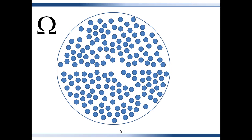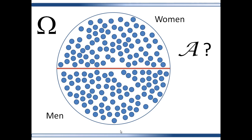Now let's look at an outcome set — here it is with all of its elements. Suppose you create a sigma algebra based on segmenting this outcome set on women and men. What would your sigma algebra look like? You would have the whole outcome set, the null set, the set women, and the set men. Any other union or complement is already there. The complement for women is men — it's there. The union of women and men is the outcome set — it's there.